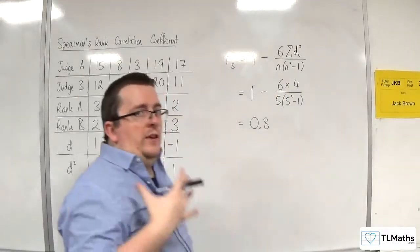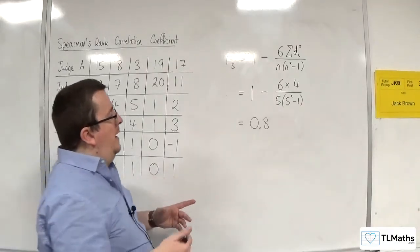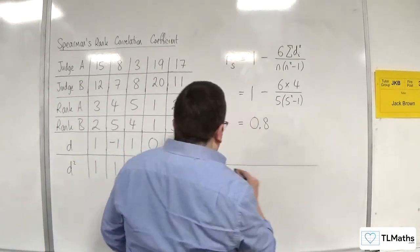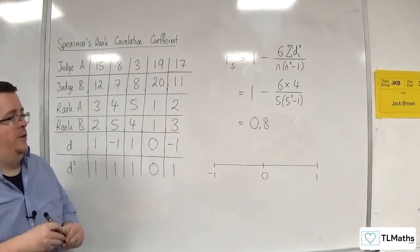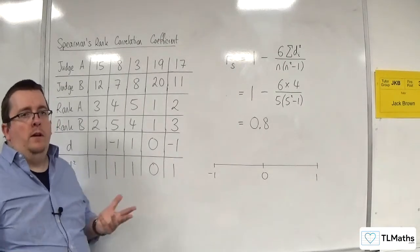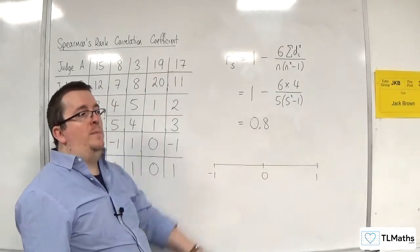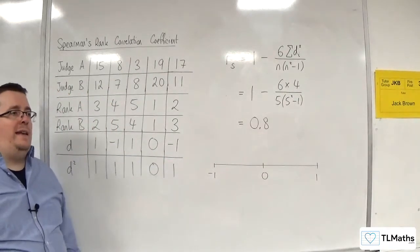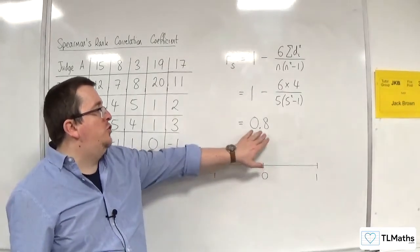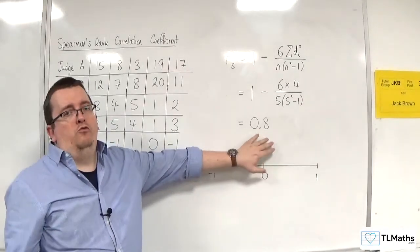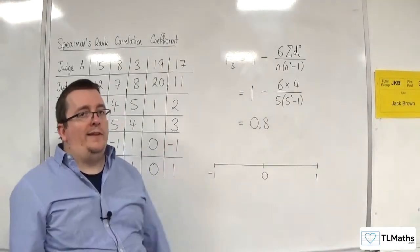Now, the Spearman's rank correlation coefficient is measured on the same scale that the PMCC is, so between minus 1 and 1, and can be interpreted in the same way. So, you would think that that is a strong, and when we talk about Spearman's rank correlation coefficient, because you don't know whether it is actually correlation or not, we talk about association. So, this would be strong positive association, rather than calling it correlation, because we don't know whether the association is linear or not.